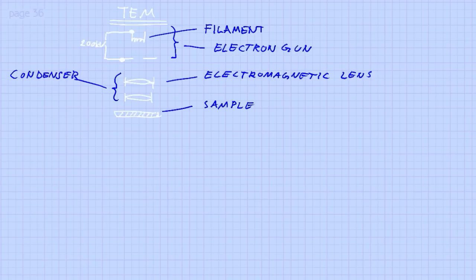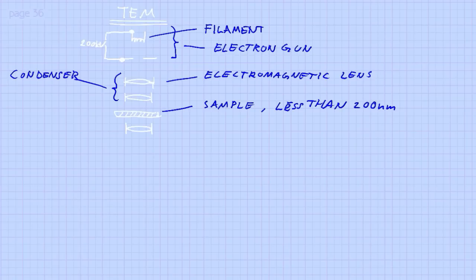Beneath the condenser we place the sample. One drawback with transmission electron microscopy is that the sample needs to be transparent to electrons, which means it must typically be less than 200 nm in thickness. Getting down to 200 nm is very challenging, so you usually need to use techniques such as electropolishing or ultramicrotoming. Beneath the sample is the objective lens, which does the focusing and is the most important lens — any error in this lens will be magnified by all subsequent lenses, so it must be set up correctly.